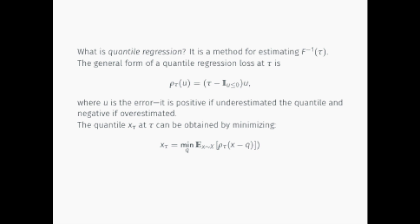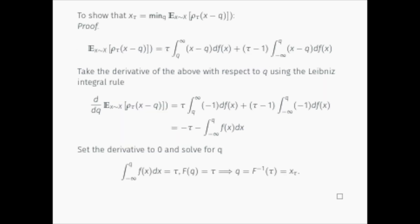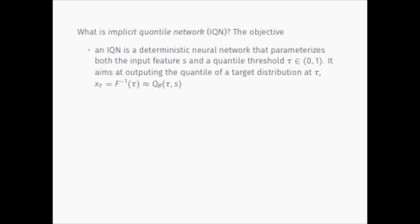We define the loss function this way because if we minimize the expectation of rho of X minus Q over Q, then it returns precisely the quantile at tau. A simple proof is presented here. Feel free to come back if interested. But for now, let's move on to talk about IQN.